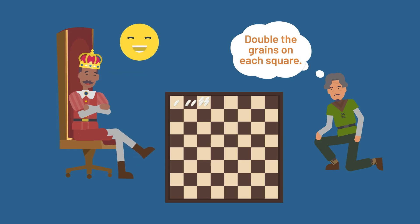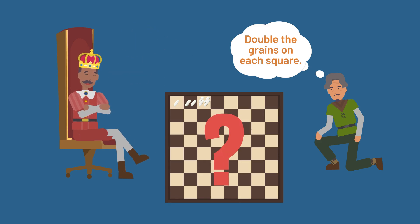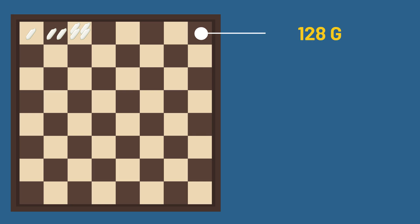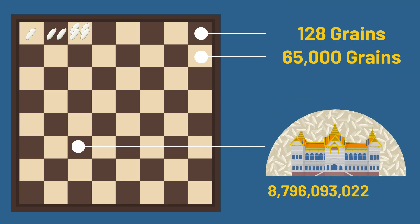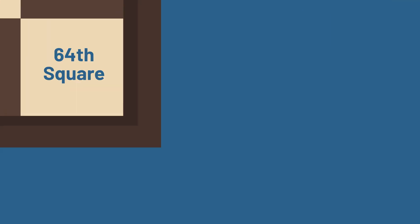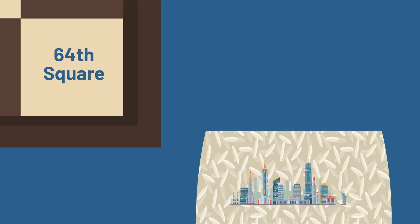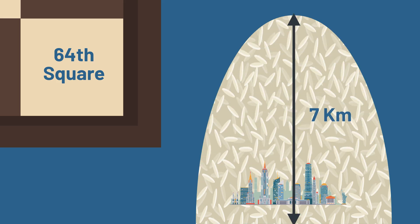The king laughed at such a humble request. After all, how much rice could it be? By the eighth square, there were 128 grains. By square 16, over 65,000 grains. By square 43, there would be more grains than could fill the entire volume of a palace. And by the final 64th square, more rice than has been produced in human history — enough to cover all of Manhattan in rice seven kilometers deep.